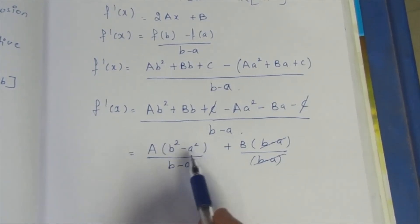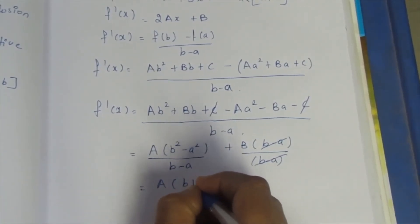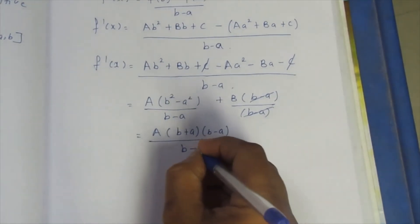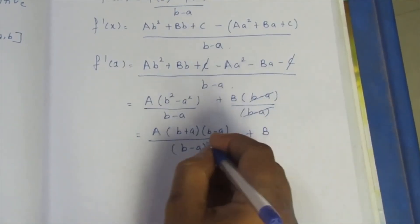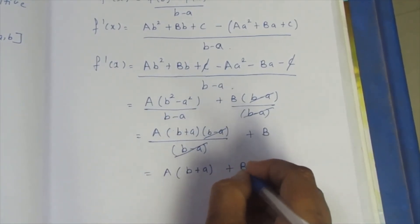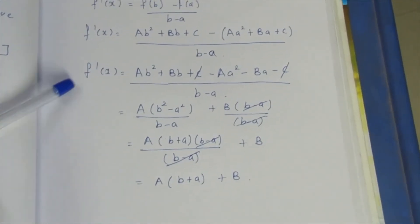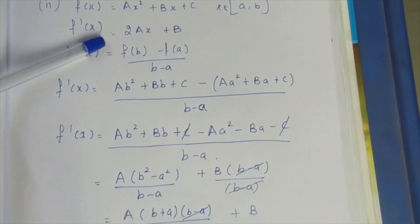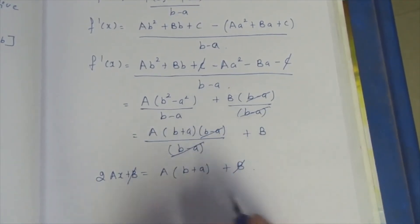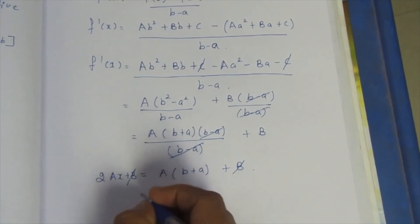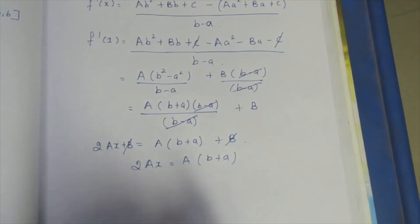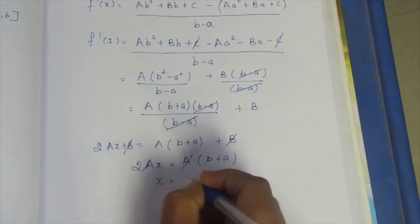This is the A² - B² formula: (b² - a²) = (b + a)(b - a). So a(b² - a²) + b(b - a) divided by (b - a) gives a(b + a) + b after cancellation. Setting this equal to f'(x) = 2ax + b: 2ax + b = a(b + a) + b. Canceling b from both sides: 2ax = a(B + A), so x = (A + B)/2. This is proved.